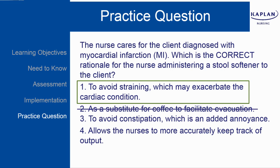Two is not correct. Caffeine is a stimulant that facilitates defecation, but stool softeners solely facilitate defecation by softening the stool — they make it easier to pass. Three: we want to avoid constipation, but the fact that it's an annoyance is not the reason. We want them to be able to have a bowel movement without straining. Four: allows the nurse to more accurately keep track of the output — measuring stools is not a necessity.